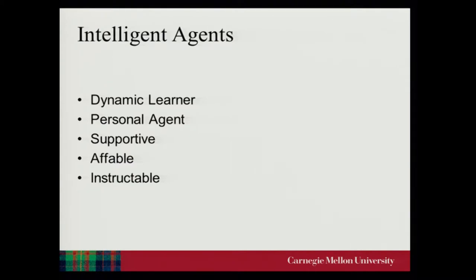The first theme is dynamic learner — an agent that constantly learns 24/7, reads the web, gathers general knowledge about the world, and also learns about the user's preferences and goals. The second theme is personal agent. The agent should be personalized to each user, and we really care about privacy-sensitive information. The agent should collect as much information as it can, but only share this information when it really needs to in order to get recommendations or do something for the user.